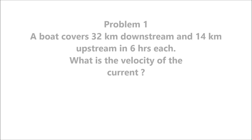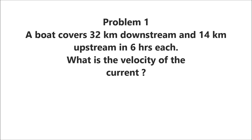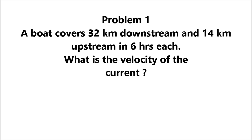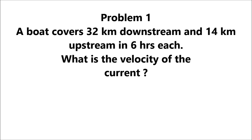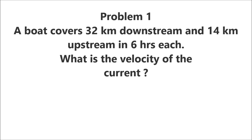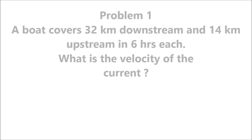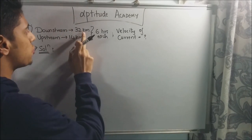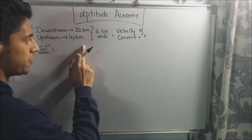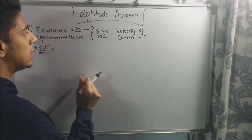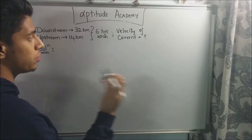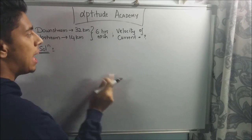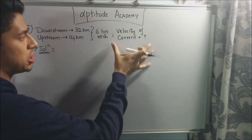Problem 1. A boat covers 32 km downstream and 14 km upstream in 6 hours each. What is the velocity of the current? For the first sum, they've said that the downstream is 32 km and the upstream is 14 km. The person who rows the boat completes each of these in 6 hours each, and they've asked you to find the velocity of the current.